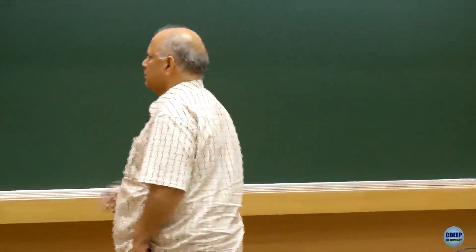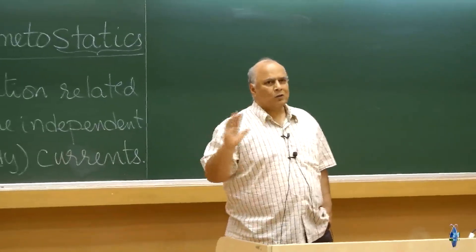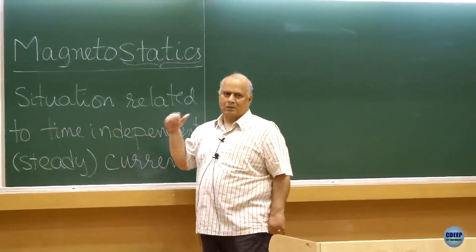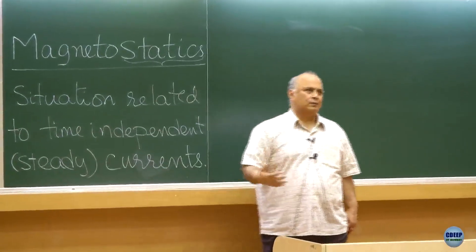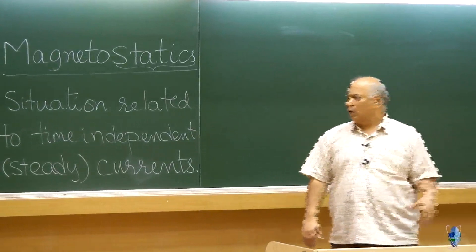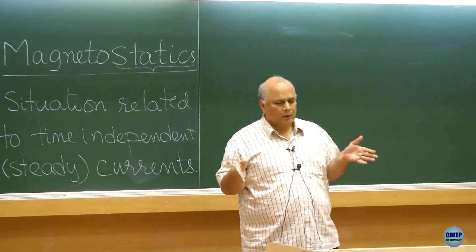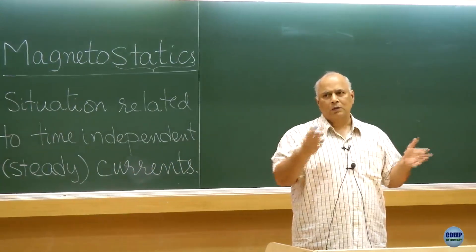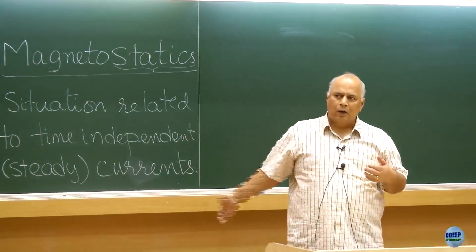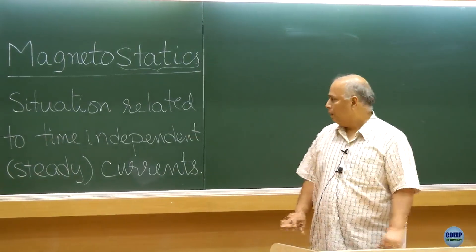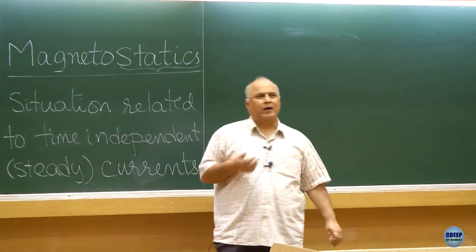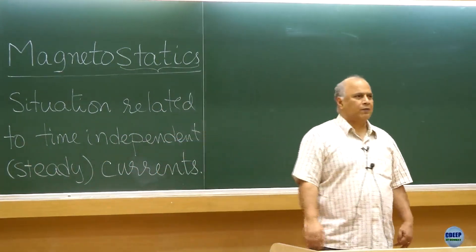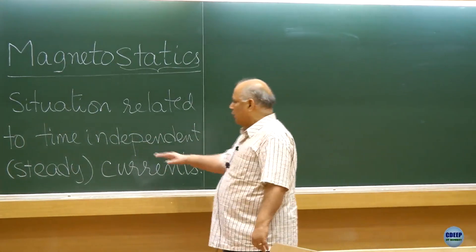So the word 'statics' sounds as if it is a contradiction in terms, but we define it in this sense: if there is a current flowing, we can consider two possibilities. One is a steady current — the flow is independent of time. Whether I look at the flow now, one minute later, one hour later, I see the same flow. If the flow does not depend on time, we call that a steady current. Magnetostatics refers to problems where the current does not depend on time.